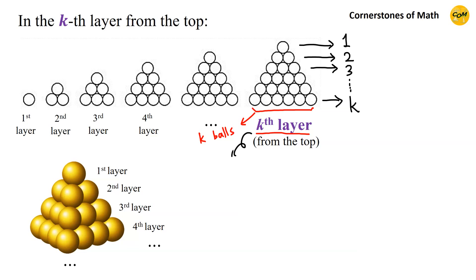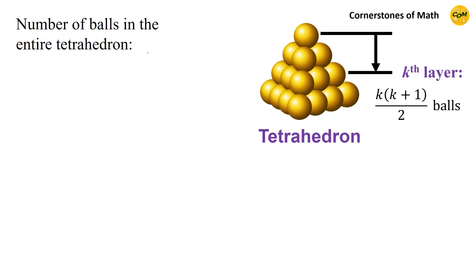Therefore, the total number of balls in the kth layer is 1 plus 2 plus 3 plus so on, plus k. And this is a simple sum of consecutive natural numbers, where the result is also very famous.